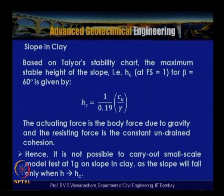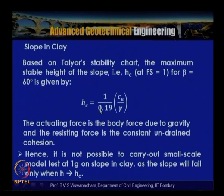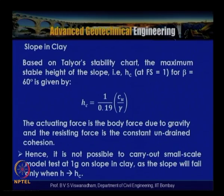Based on Taylor's stability chart, the maximum stable slope height h_c at factor of safety equal to 1 for beta equal to 60 degrees is given by stability factor 0.191. So h_c equals (1/0.191) times c_u divided by gamma. This indicates that in order to attain the critical height, the slope must be raised to this height so that the factor of safety equals 1.